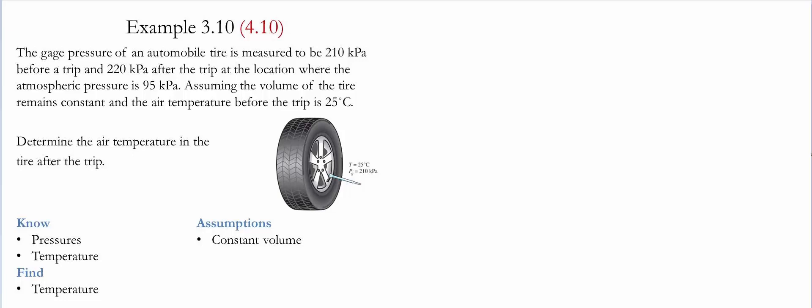Example 3.10 or 4.10 for the given textbooks. For details, please see the description below. In this example, the gauge pressure of an automobile tire is measured to be 210 kilopascals before the trip and 220 kilopascals after the trip at a location where the atmospheric pressure is equal to 95 kilopascals. Assuming the volume of the tire remains constant and that the air temperature before the trip is 25 Celsius, the task is to determine the air temperature in the tire after the trip.